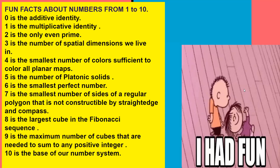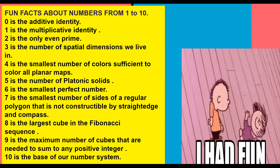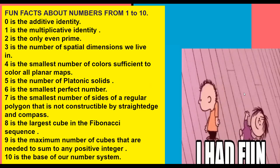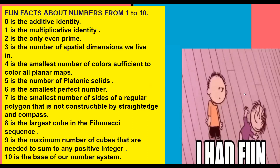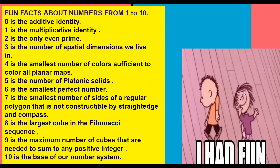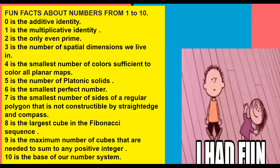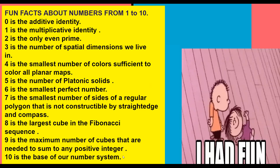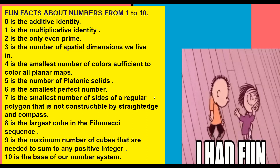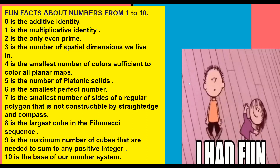Here are some fun facts about numbers from 1 to 10. Zero is the additive identity. One is the multiplicative identity. Two is the only number which is even but also prime. Three is the number of special dimensions we live in. We have taken all the fun facts of numbers from 1 to 10, and in the next video I'll try to give you the next set.